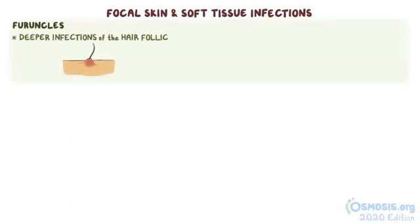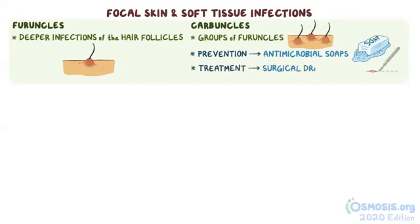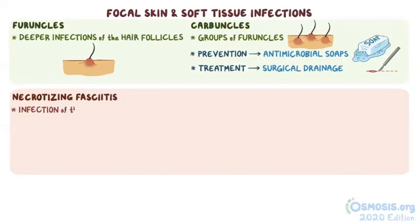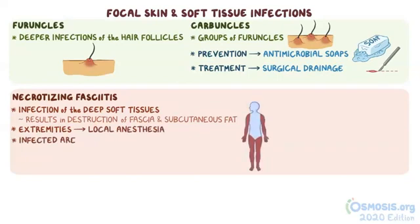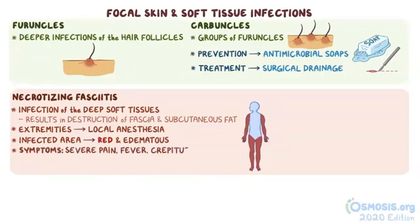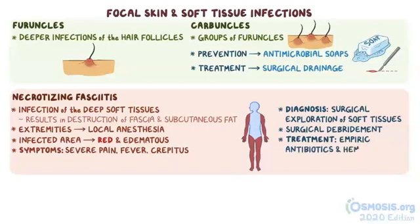Furuncles are deeper infections of the hair follicles, and carbuncles are groups of furuncles. Prevention includes regular bathing with antimicrobial soaps, and treatment sometimes requires surgical drainage. Finally, necrotizing fasciitis is an infection of the deep soft tissues that results in the destruction of muscle fascia and overlying subcutaneous fat. It most commonly involves the extremities, where it might debut with local anesthesia. Then the infected area gets red and edematous, and individuals also present with severe pain, fever, and crepitus. The diagnosis of necrotizing fasciitis is established with surgical exploration of the soft tissues, which is also when surgical debridement is performed. Treatment consists of empiric antibiotics and hemodynamic support.